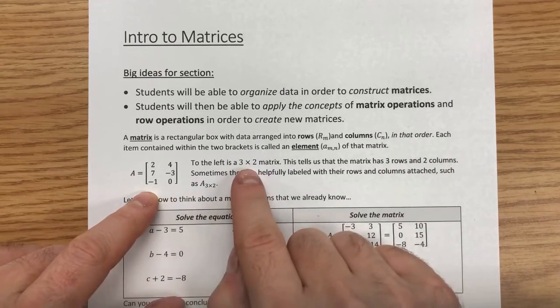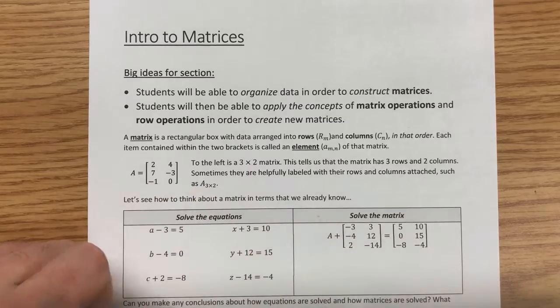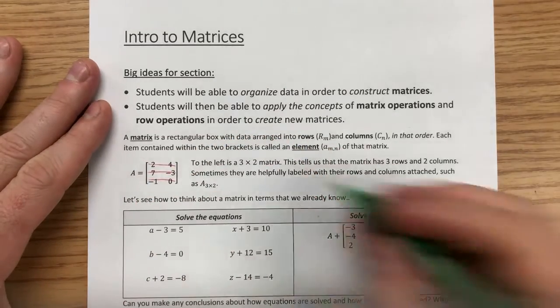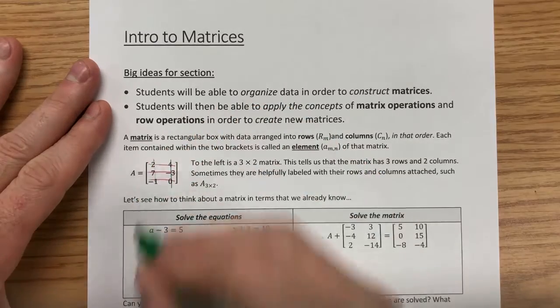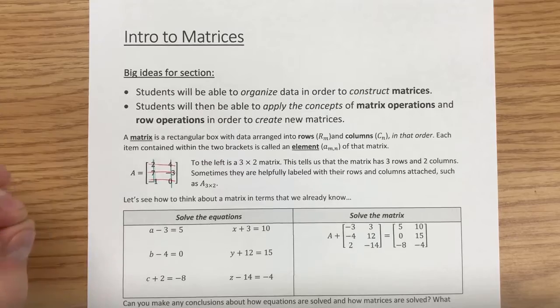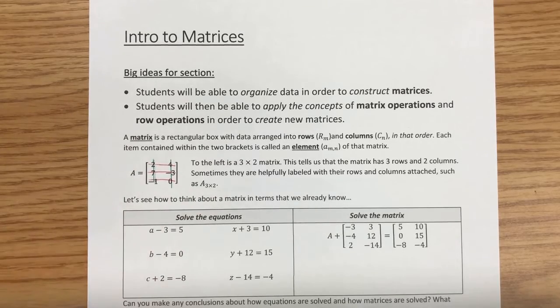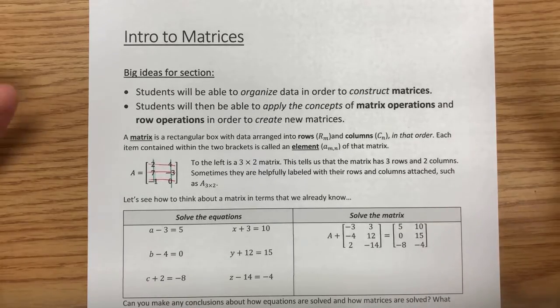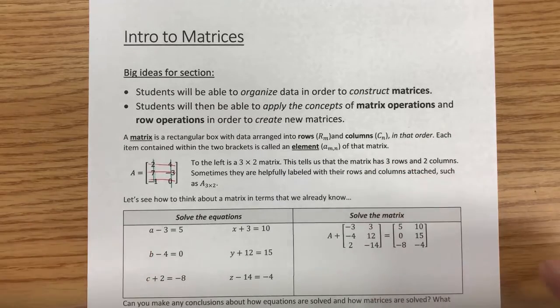So what we see here is that A is going to be a 3 by 2 matrix, which means that we have one, two, three rows, and we have one, two columns. It is always going to be listed in that order. A is always going to be a 3 by 2 matrix, not a 2 by 3 matrix. Now that might not seem like a big deal, but when we get to matrix multiplication, we'll see why that is important to always list them as a 3 by 2.